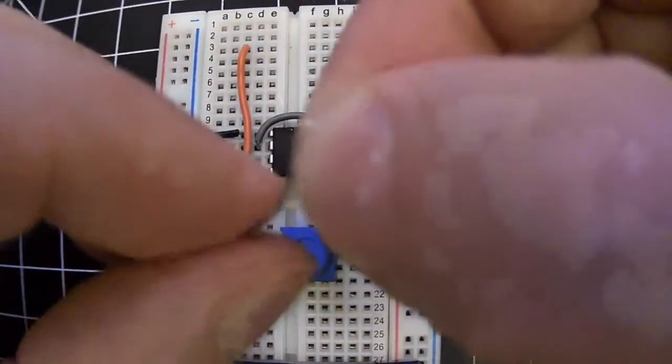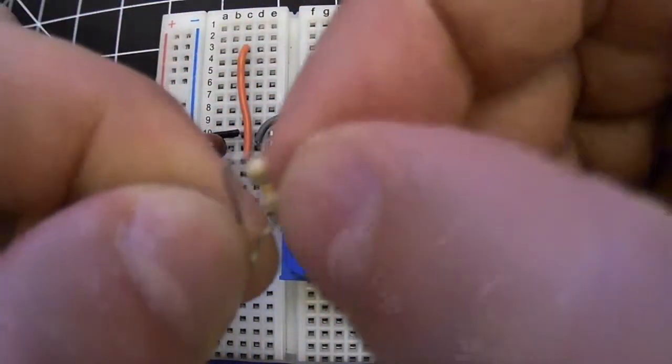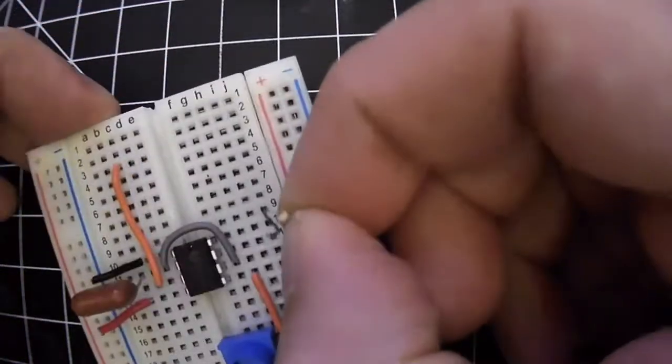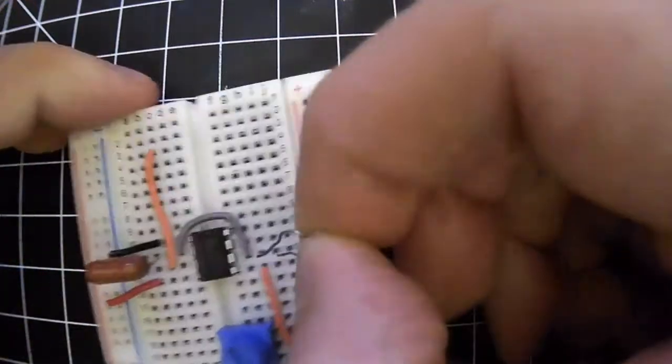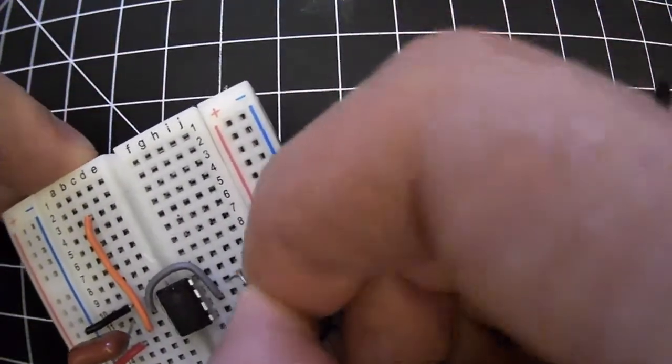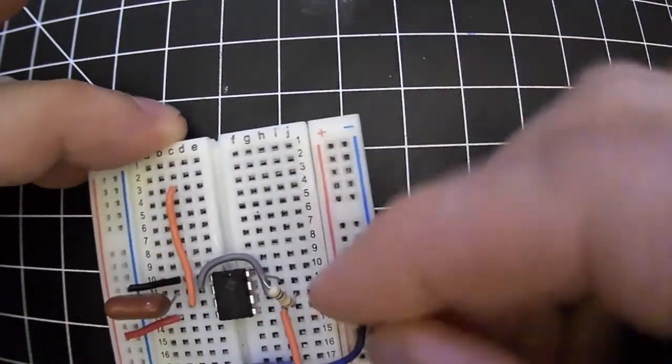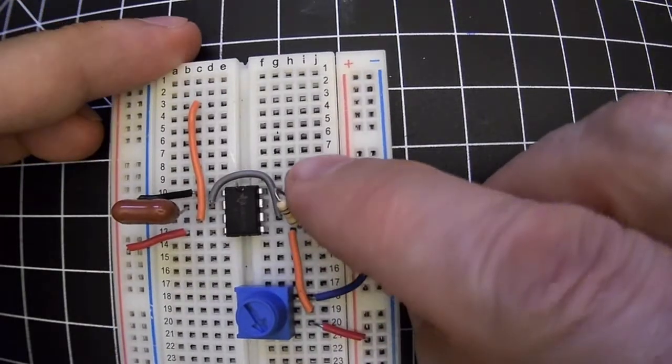But one trick you can use is to do this. So it can be connected to the neighboring pin. So now 2 is connected to 7.